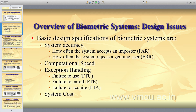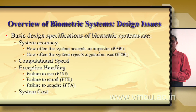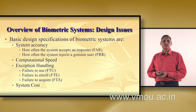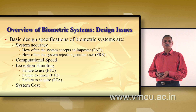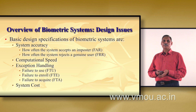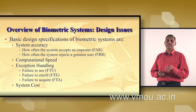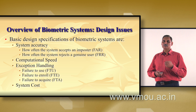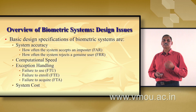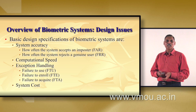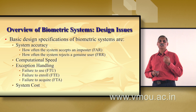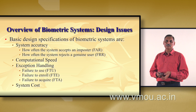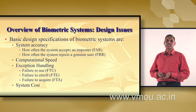The design issues in biometric systems include: system accuracy — how often the system accepts an impostor, called the false acceptance rate, and how often the system rejects a genuine person, called the false rejection rate. Computational speed is also important; in real life applications the matching time should be very low. Other issues include failure to use the system, failure to enroll a new person, failure to acquire the image or signature, and ultimately the system cost.